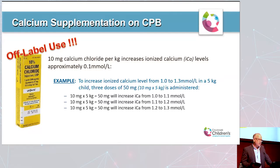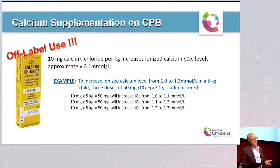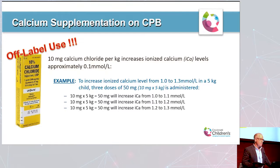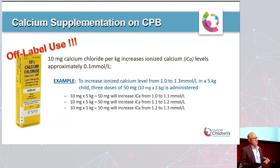This is an off-label use of calcium chloride, but it's how we calculate it at Cincinnati Children's. If you take 10 mg/kg body weight of calcium chloride, that will increase ionized calcium levels by 0.1 mmol/L. So on a 5 kg patient, if you want to increase calcium from 1.0 to 1.3, you would give three doses of 50 mg each to bump it from 1.0 to 1.1, then 1.1 to 1.2, then 1.2 to 1.3. This works well for pediatric patients up to about 35 kg.